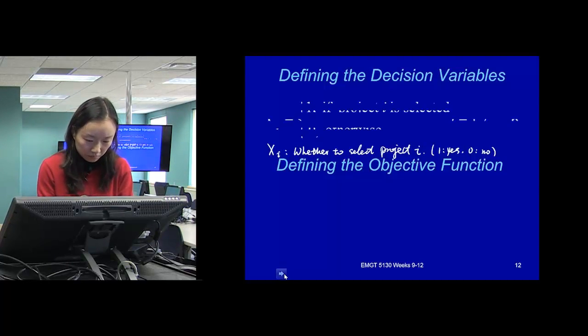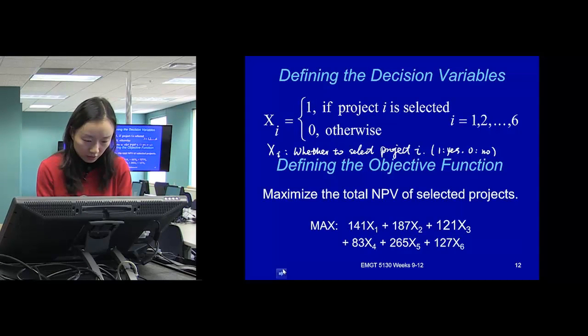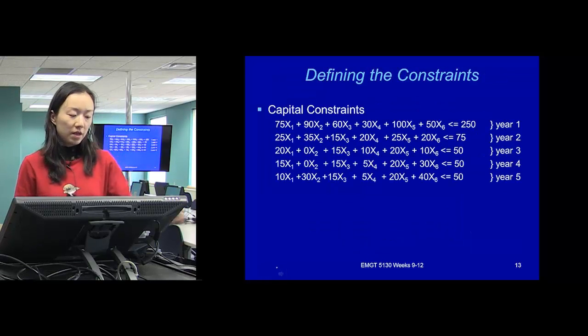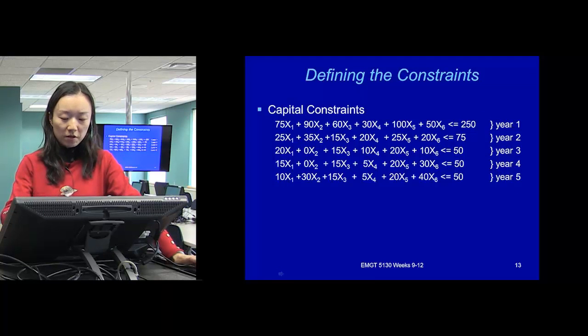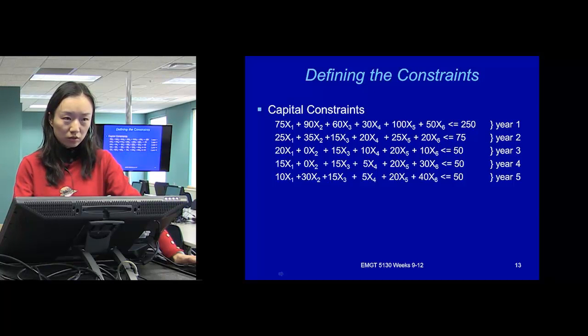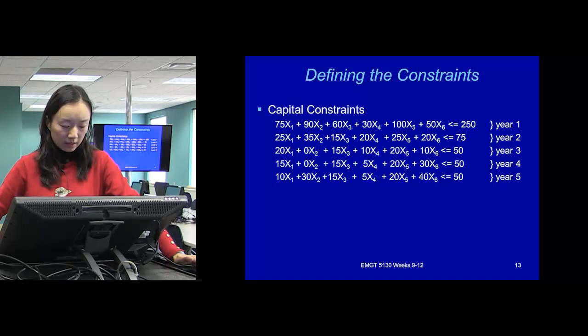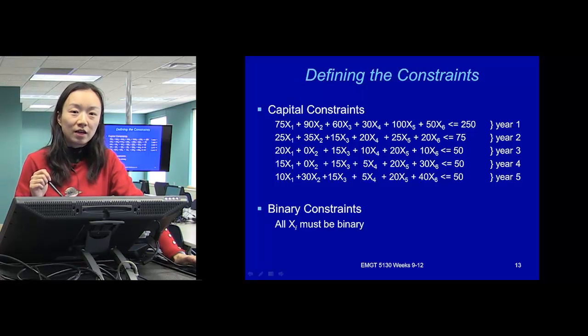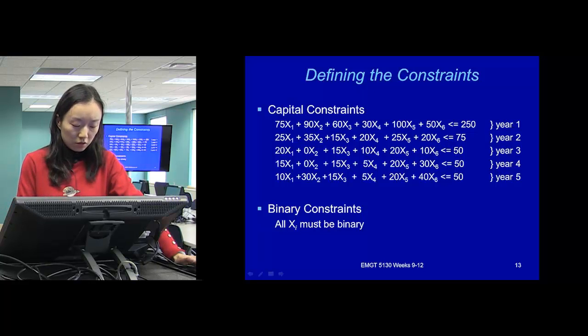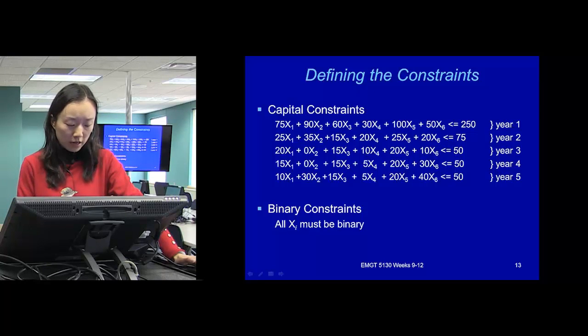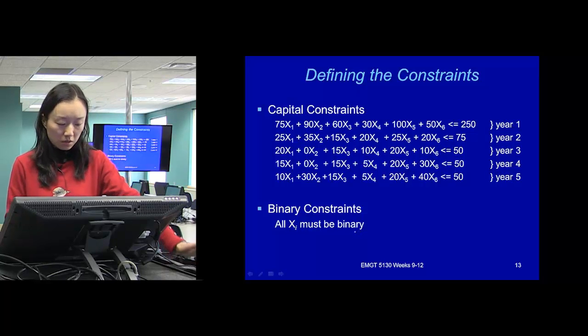So the objective function we already defined. The constraints will be in this format. That will be from year one to five, and we use all the binary X variables to turn on or off those capital investments required for all the project. And the right hand side will be the capital budget available. Then we need to, even though you specify the decision variable will be zero or one, you need to add in the constraint part: all Xs must be binary.